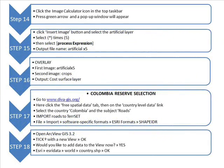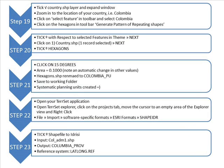In Diva-GIS, download roads and import to Tercet. Open ArcView GIS and click New View. Check ESRI Data, World, and select the country shapefile. Check the country layer in view. Zoom in to the location of your country, i.e. Colombia. Click on Select Feature in the toolbar and then select your country, Colombia. Click on the Hexagons tool in the toolbar.